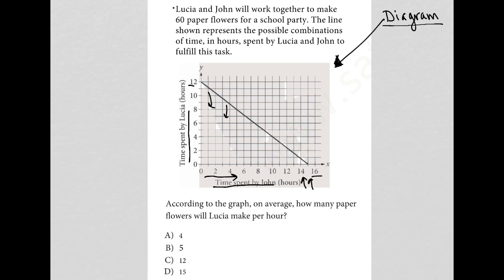Let's look at the question. Lucia and John will work together to make 60 paper flowers for a school party. The line shown represents the possible combinations. So let's pay attention to that. It is not the actual combination of time. It is the possible combinations of time in hours spent by Lucia and John to fulfill this task.